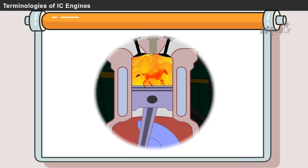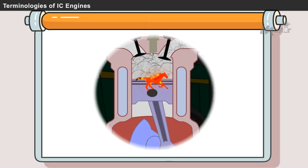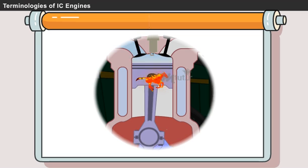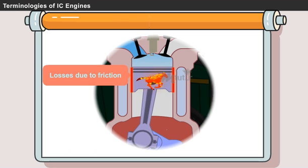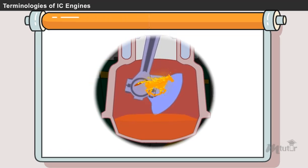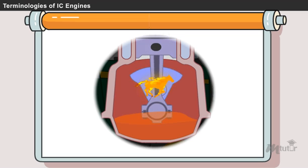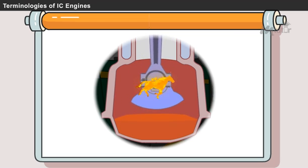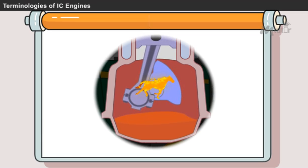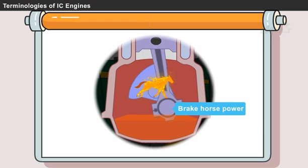The indicated power produced in the cylinder of the engine cannot be achieved completely by the crankshaft. There will be some loss due to friction. So the crankshaft never receives the whole power generated in the engine cylinder. The horsepower available in the crankshaft is known as brake horsepower.